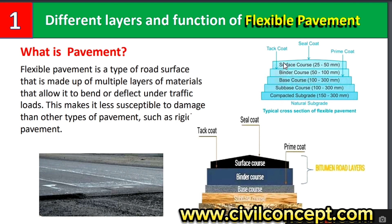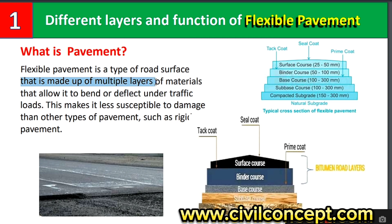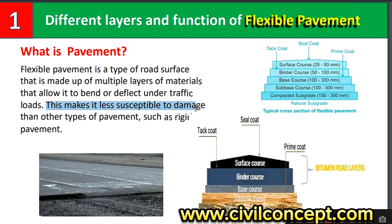First of all, what is pavement? Flexible pavement is a type of road surface made up of multiple layers of materials that allow it to bend or deflect under traffic load. When a load is applied on the surface, it deflects somewhat and transfers the load to the lower layers.